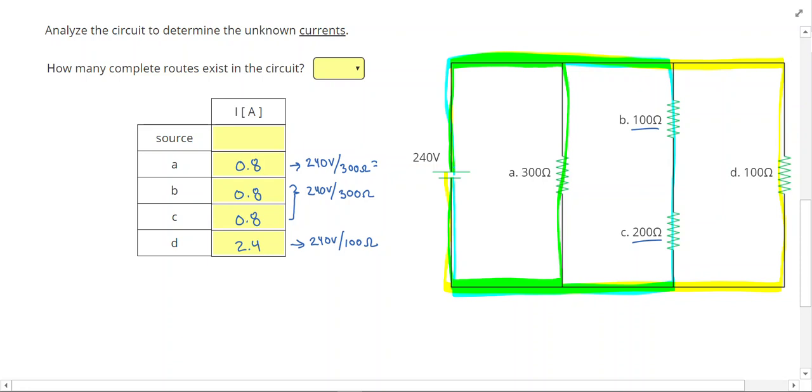We know that we have three different routes and so I should be adding up three different currents. The first route only took us through A, so I'll add that 0.8.